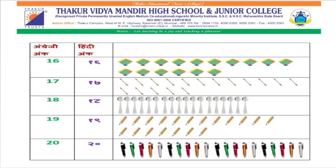अंग्रेजी में 18, Hindi में १८ (atharah). कुल चम्मच? 1, 2, 3, 4, 5, 6, 7, 8, 9, 10, 11, 12, 13, 14, 15, 16, 17, 18. कुल अमारे 18 चम्मच होंगे।